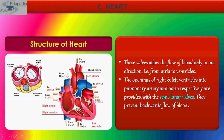The right ventricle pumps blood to the body. The vena cava is where blood is received from the body. As for the left atrium and left ventricle, they receive blood from the lungs via the pulmonary veins.